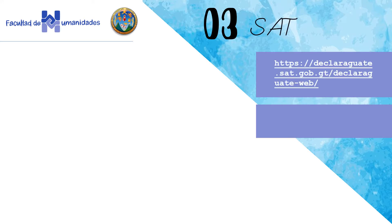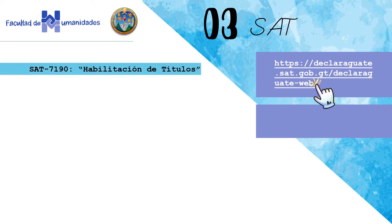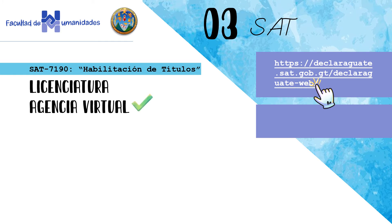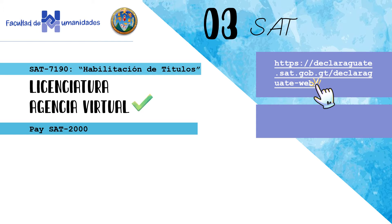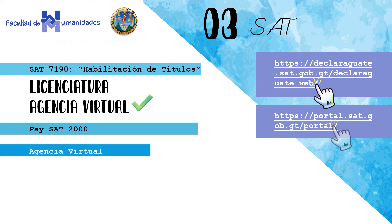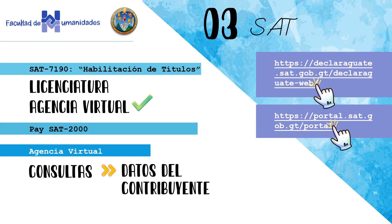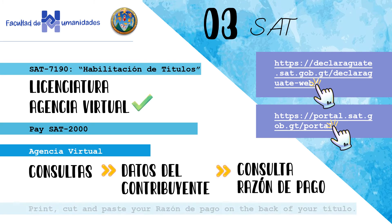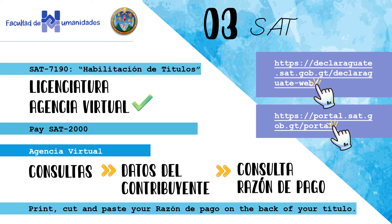These are the steps. For SAT, go to declaraguate.sat.gov.gt/declaraguateweb and complete form SAT 7190 called Habilitación de Títulos. Choose Licenciatura de Air. You must have an agencia virtual to complete the process. Pay SAT 2000 quetzales from your banca virtual or at any bank in the system. Login to your agencia virtual from portal.sat.gov.gt/portal and go to the consulta section. Enter Datos del Contribuyente and click Consulta de Razón de Pago so you can download the stamp. Print, cut, and paste your razón de pago on the back of your título. With this, you're all set — your título is valid with SAT.